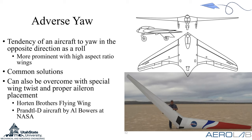Coming back to adverse yaw — one way I like to think about it: in NASCAR, the track banks to the left. If you're on that track and bank left, suddenly you're turning right even though the track is banking left. That's similar to what adverse yaw does for aircraft. We really want to try to achieve proverse yaw and decrease our drag.